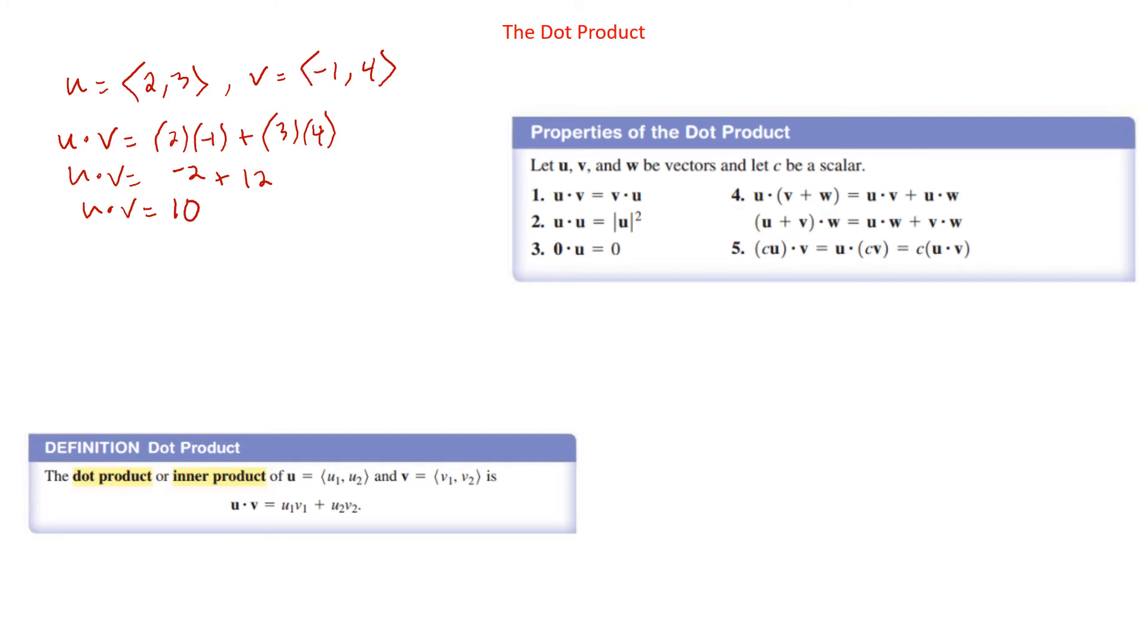Four, if we're dotting into a sum, we can distribute that. So u dot v plus w is u dot v plus u dot w. And same thing if it was on the other side, u plus v dot w is u dot w plus v dot w. And if we're multiplying a dot product by a constant, we can multiply either of the two vectors by the constant, not both of them, but we can multiply either of the two. And so those are just some of the properties we can use with dot products.